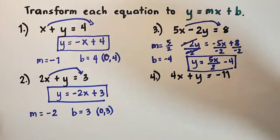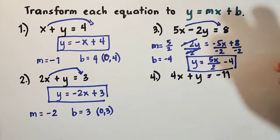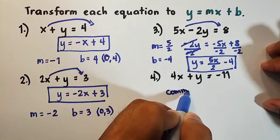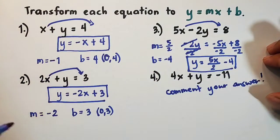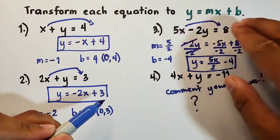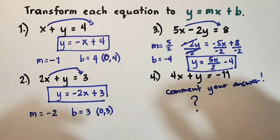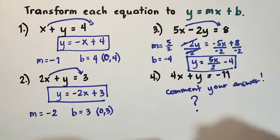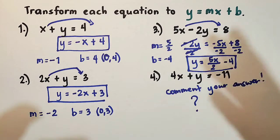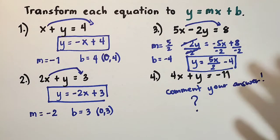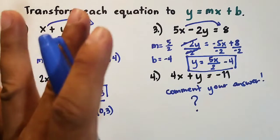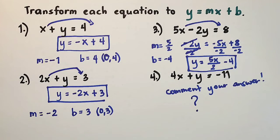For equation four, 4x plus y is equal to negative 11 — this will serve as your assignment. Comment your answer: what is the slope-intercept form, the value of m, and the value of b for this equation. I hope you learned something from this video on how to write a linear equation in standard form ax plus by equals c, and transform each equation into slope-intercept form y equals mx plus b. If you're new to my channel, don't forget to like, subscribe, and hit the bell button for updates. Again, it's me Teacher Gon — maraming salamat, bye!